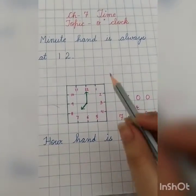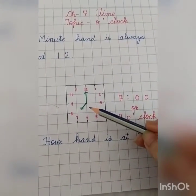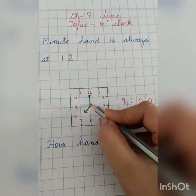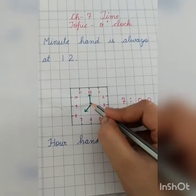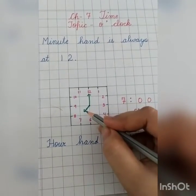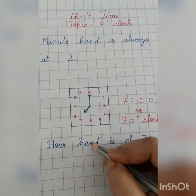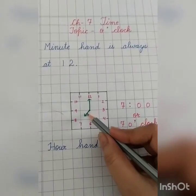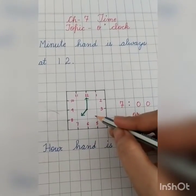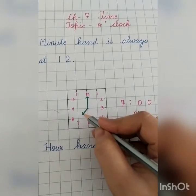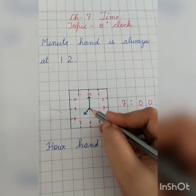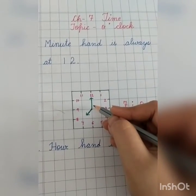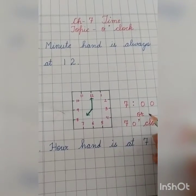So children, in o'clock your minute hand is always at twelve. So what time is this clock showing? Seven o'clock.